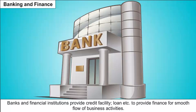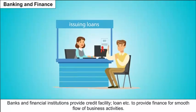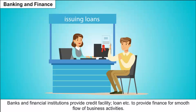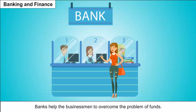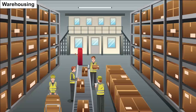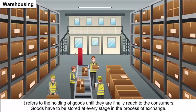Banking and finance: banks and financial institutions provide credit facilities, loans etc. to ensure smooth flow of business activities. Banks help businessmen overcome the problem of funds. Warehousing refers to the holding of goods until they finally reach consumers. Goods have to be stored at every stage in the process of exchange.